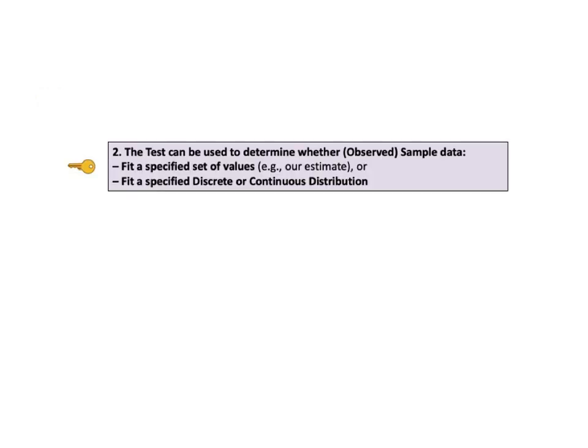Moving on to key number two. The test can be used to determine whether the observed sample of data fits a specified set of values — for example, our estimates — or whether the observed data fit a specified discrete or continuous distribution, for example whether the data is normal. A number of statistical tests assume that the data is normal, so before using those tests one must make sure.